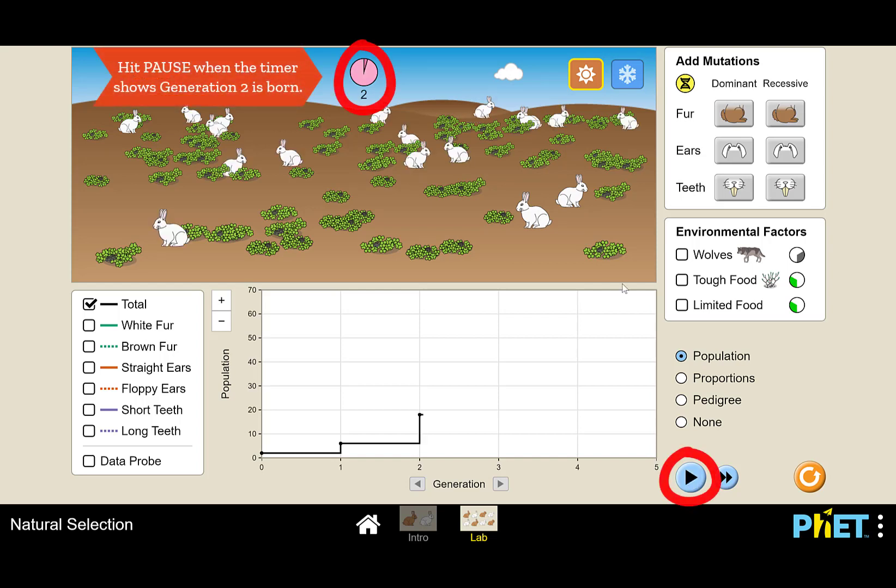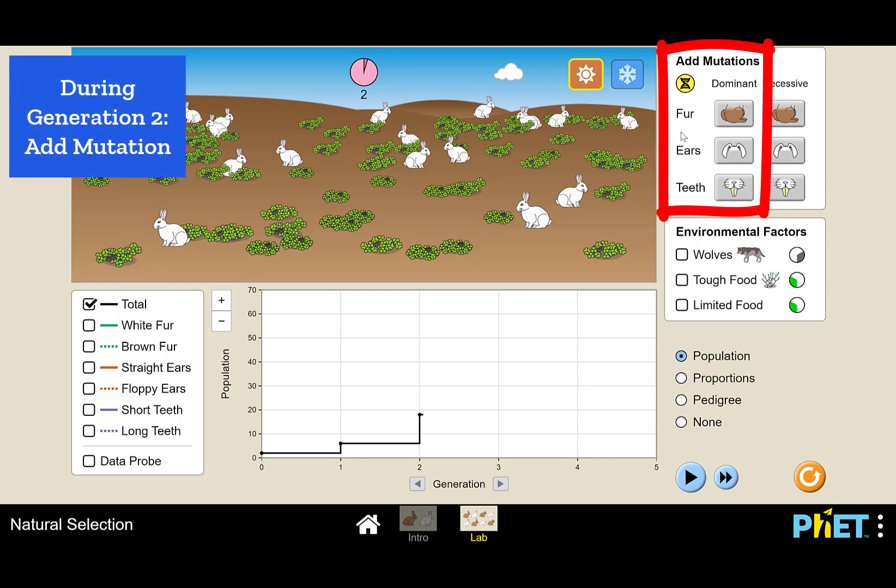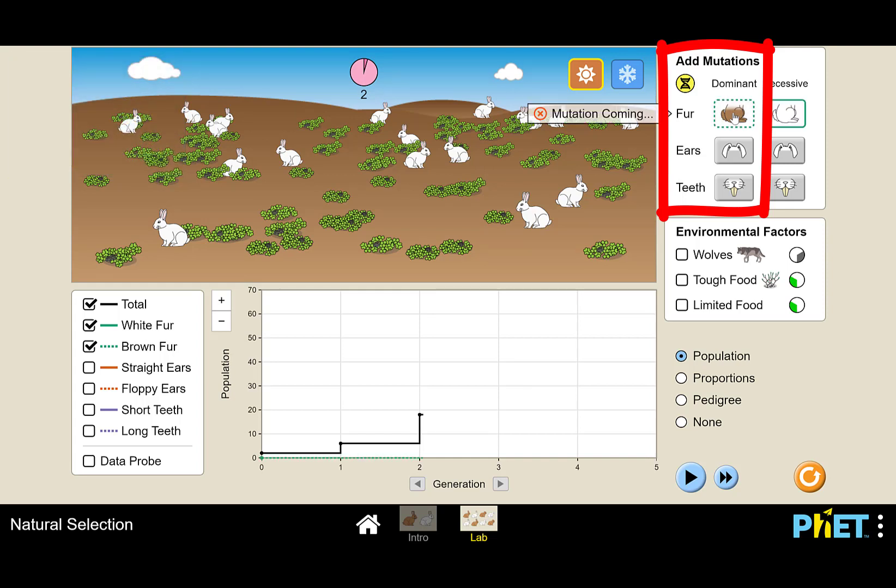So we have a nice population. Okay, population generation number two we have here on the screen. And at the beginning of generation two, we're going to introduce the genetic mutation which causes our new phenotype of brown fur. So I'm going to click on fur. And notice it's still paused. And when I hit the play button, we will have a mutation in one of the rabbits. So that brown fur is an option.